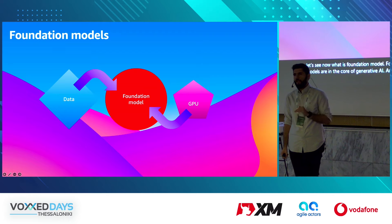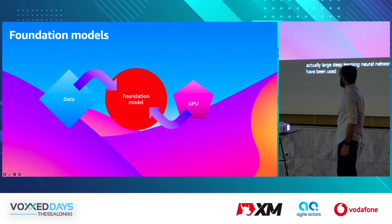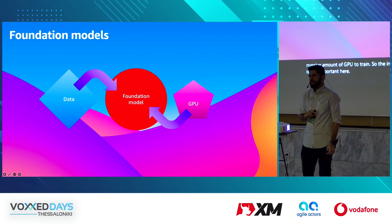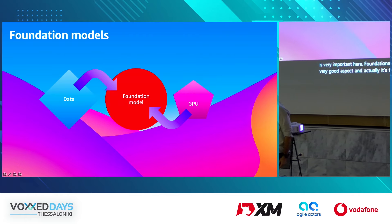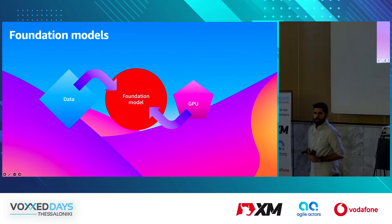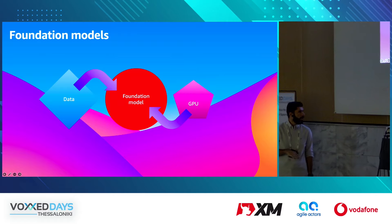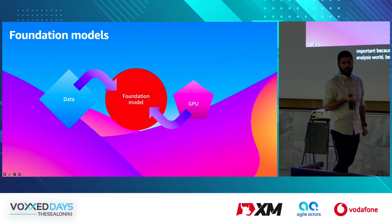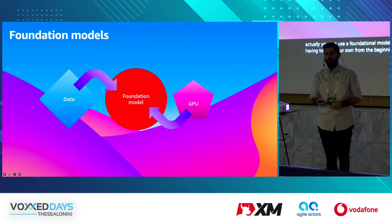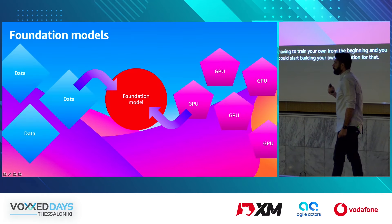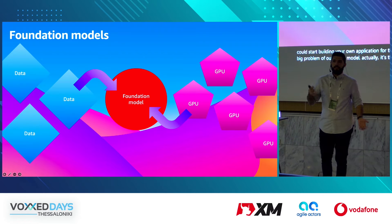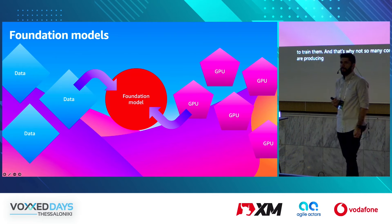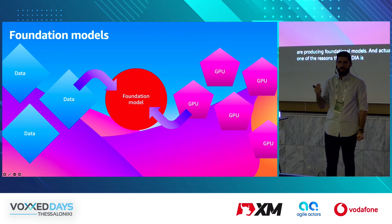Foundation models are large deep learning neural networks that have been trained on massive amounts of data using massive GPU infrastructure. They are very adaptable — you can use one foundation model for different tasks like generating content, writing poems, or achieving high accuracy in data analysis. Instead of training your own model from scratch, you can use a foundation model to start building your own application. A big challenge is their size — massive data and massive GPUs are needed to train them, which is why not many companies produce foundation models, and one reason NVIDIA is among the highest-valued companies in the world.